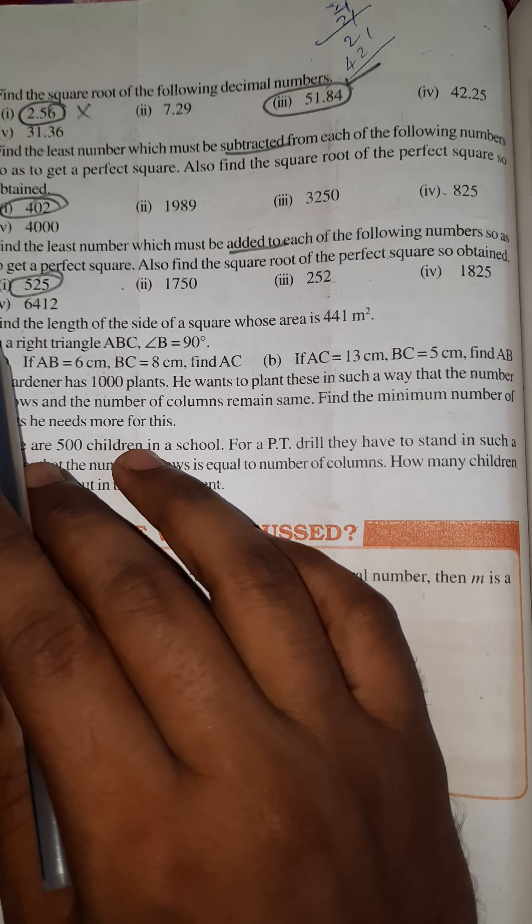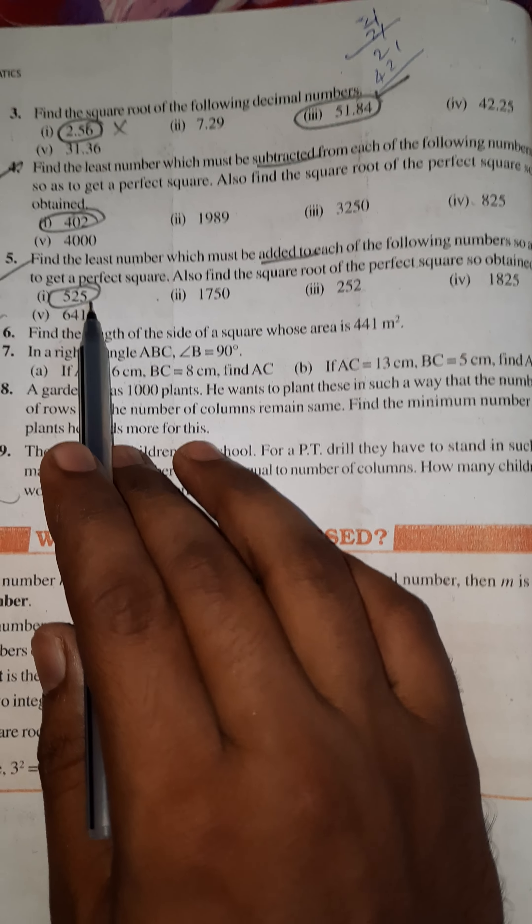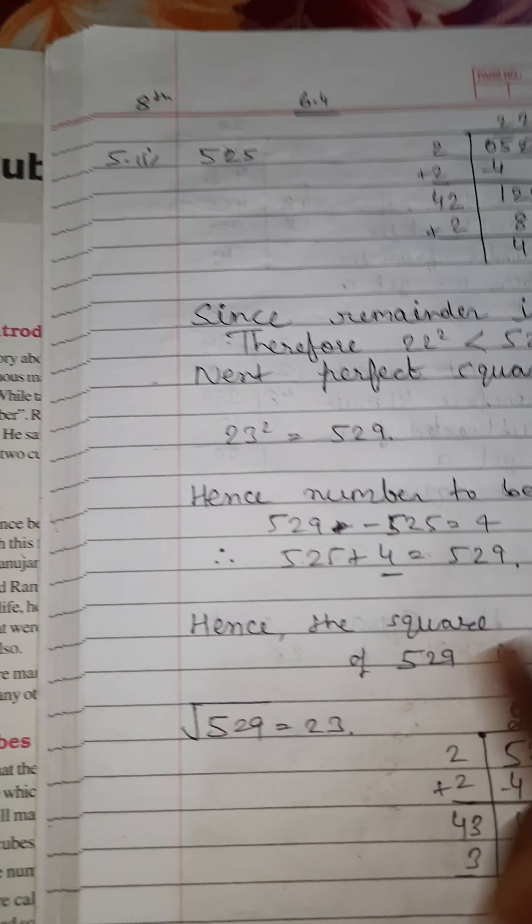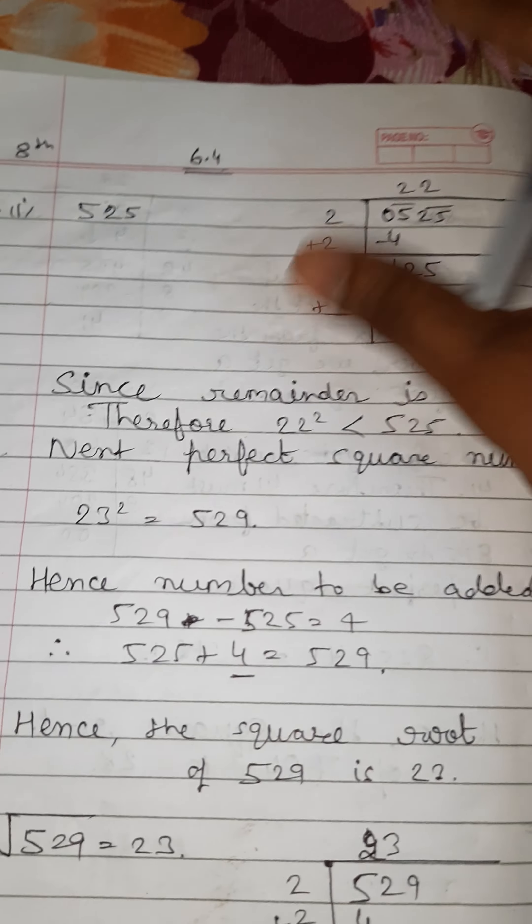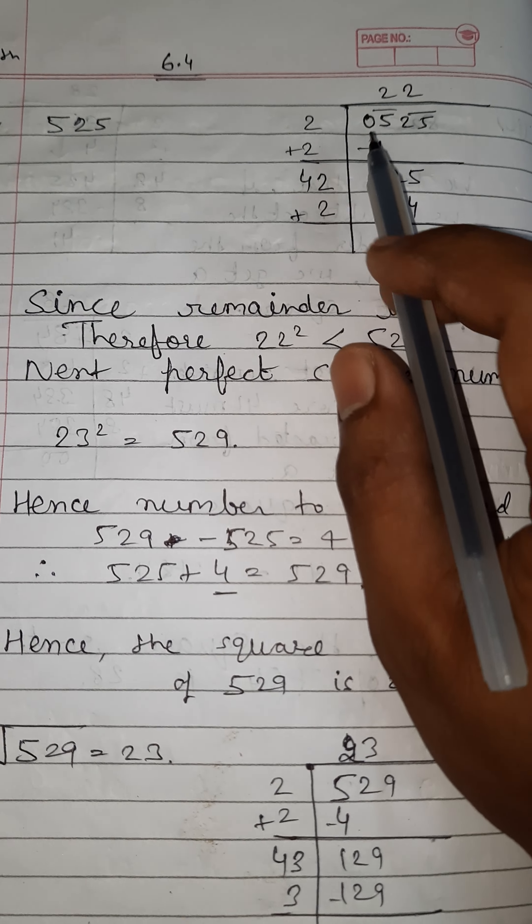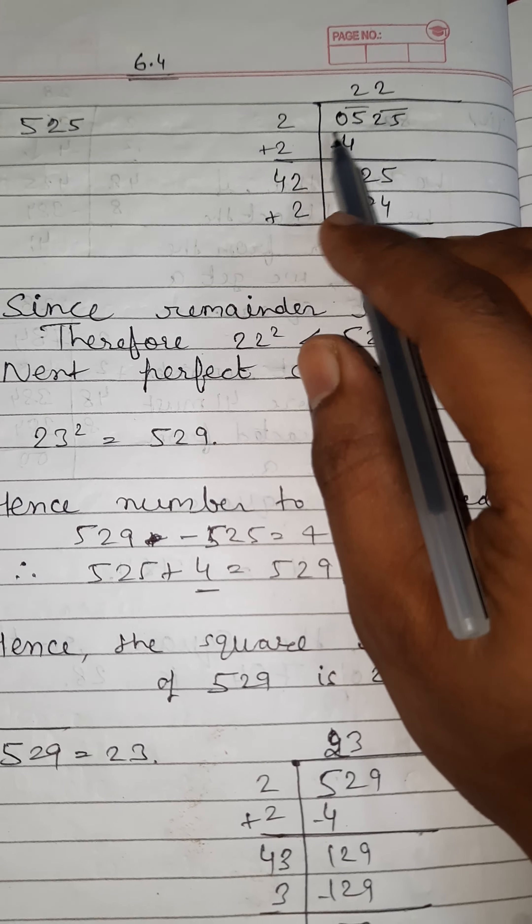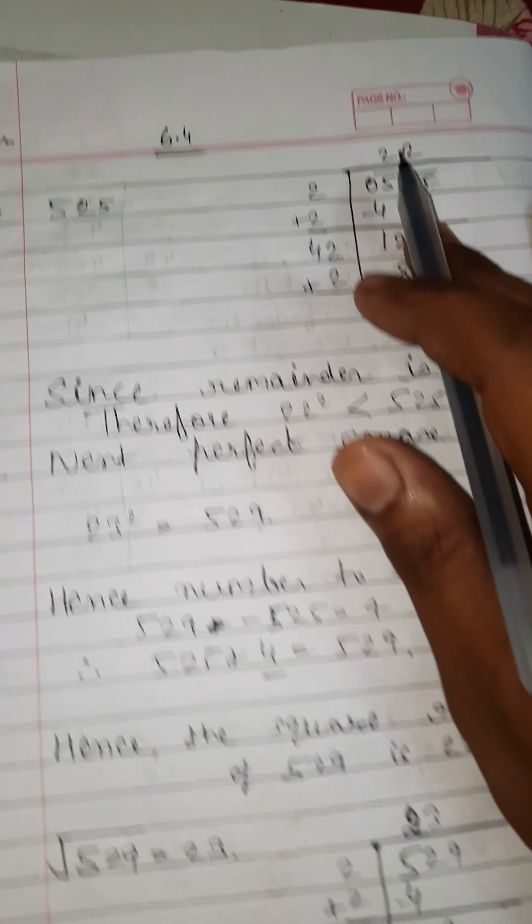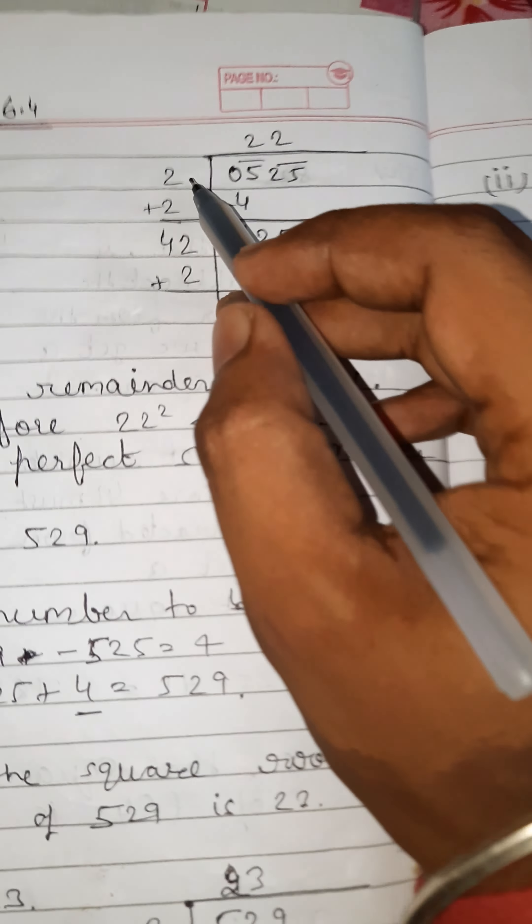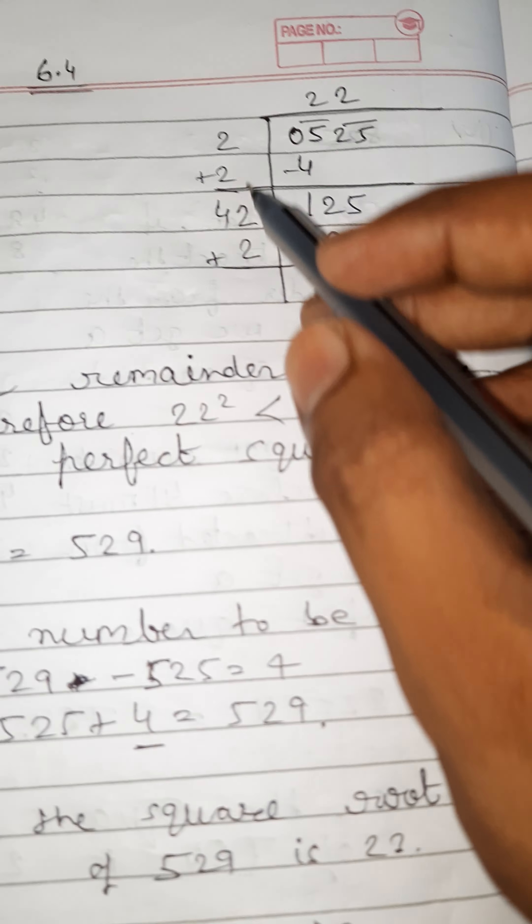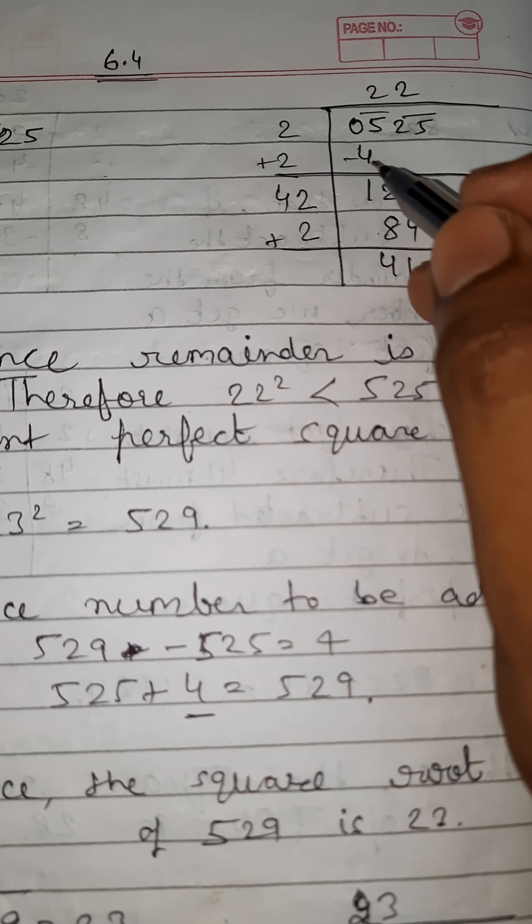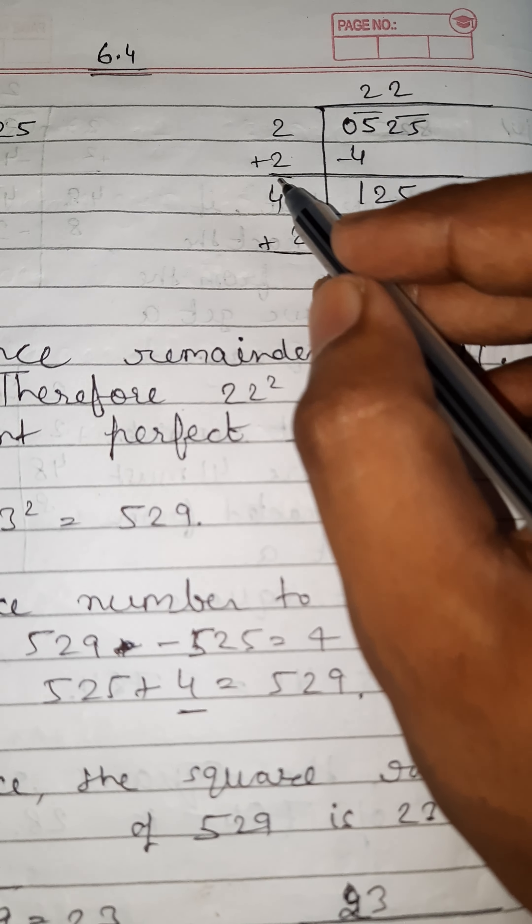First, 525. We have to solve 525. First find the square root of the numbers by division method. Then put 525 in division method: 05 and 25, because the first pair is 25 and the second is 05. Now we have to put a number whose square is equal to 5 or less than 5. Then put 1 here and here for the answer.